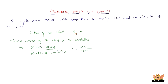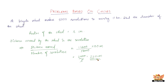Since we've taken the radius of the wheel to be r centimeters, let us multiply by 100 to convert into centimeters, because this is in meters and one meter equals 100 centimeters. To convert the whole thing into centimeters, we multiply by 100, giving us 1,100 over 5, which is 220 centimeters.